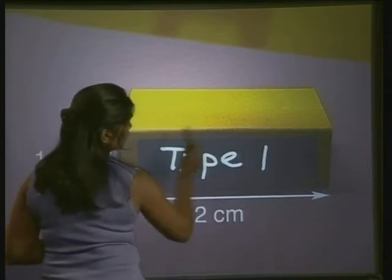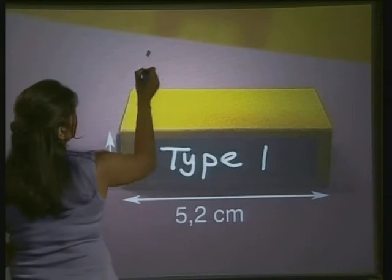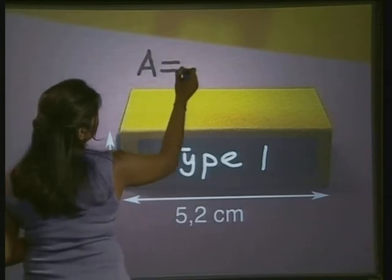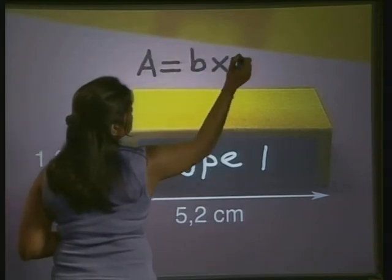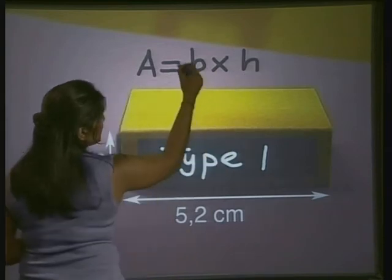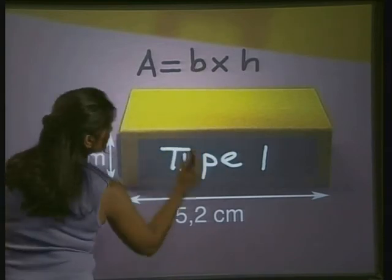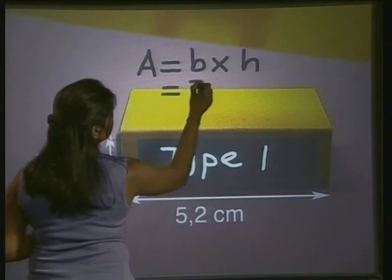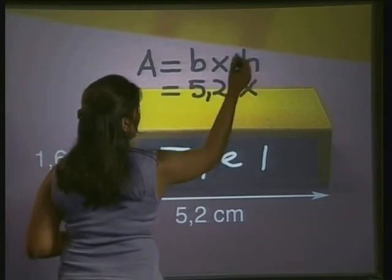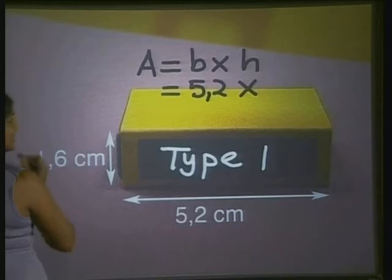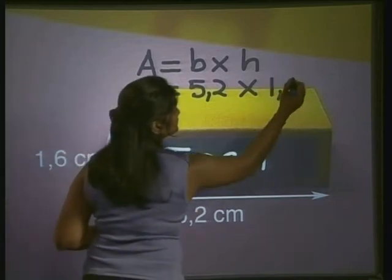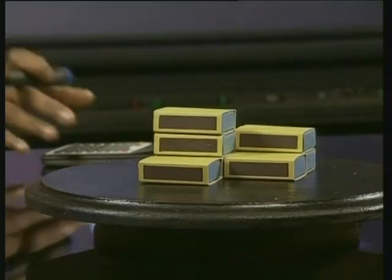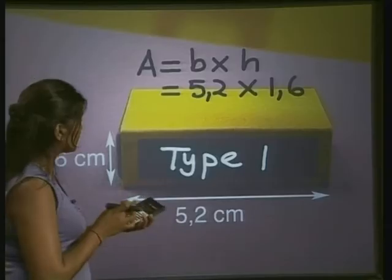Now the surface area of this rectangle is given by this formula: area is equal to base multiplied by height. Now we know that the base is 5.2, so I'll substitute that here, multiplied by the height which is 1.6. And we'll use our calculator to work this value out.